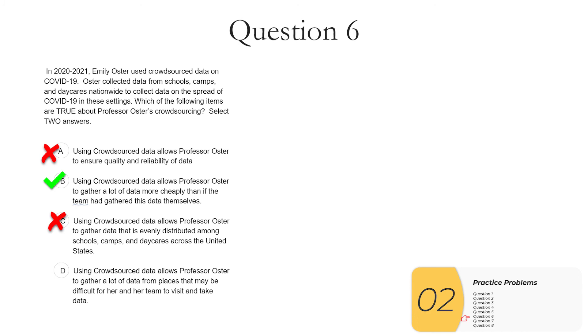D, using crowdsourced data allows Professor Oster to gather a lot of data from places that may be difficult for her and her team to visit and take data. This is definitely true and is one of the big advantages of crowdsourced data. You can get a lot of data from a lot of places that you wouldn't normally get. So the answers here are B and D.